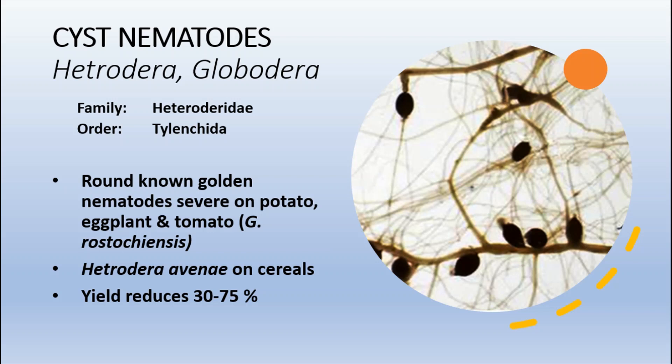These are all very important nematodes in areas where lower temperatures prevail throughout the year. For example, in the northern areas of Pakistan there is a significant infestation of Heterodera avenae on cereals, with 32 to 75 percent losses recorded for these nematodes.